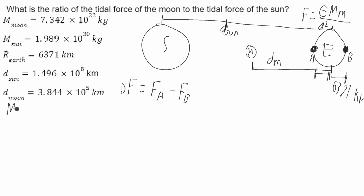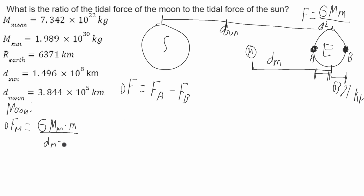I'll start with my equation for the moon. Delta F of the moon is going to be equal to G times the mass of the moon times the mass of the water over the distance from the moon minus the radius of the Earth, squared, minus G times the mass of the moon times the mass of the water over the distance from the moon to the Earth plus the radius of the Earth, squared.